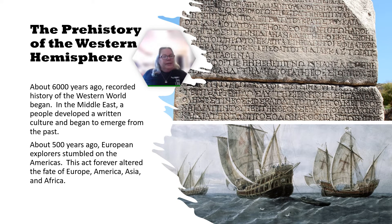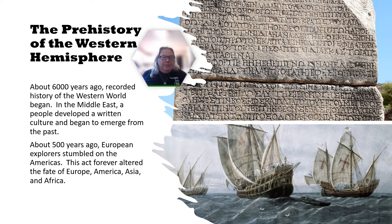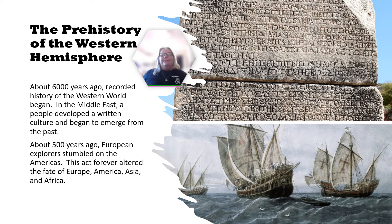Now we're going to talk a little about the prehistory of the Western Hemisphere. About 6,000 years ago, recorded history of the Western world began in the Middle East, where a people developed a written culture and began to emerge from the past. About 500 years ago, European explorers stumbled on the Americas — an act that forever altered the fate of Europe, America, Asia, and Africa.